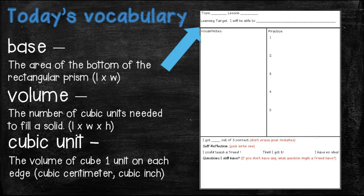All right, here's today's vocabulary words. Our first one is base. That is the area of the bottom of a rectangular prism. Remember, to find area, we would find the length times the width. So the base is the area of the bottom of a rectangular prism.